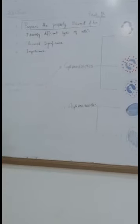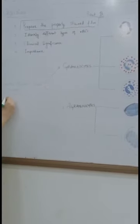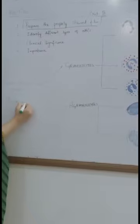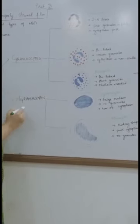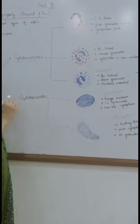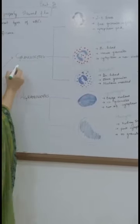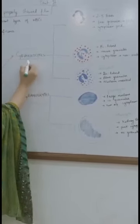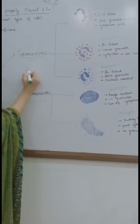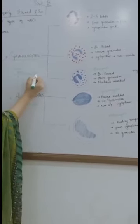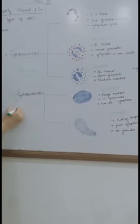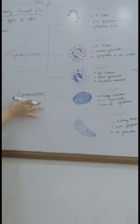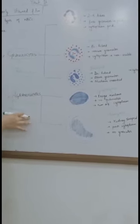White blood cells, WBCs or leukocytes — as you have read in your theory, there are two types of WBCs: granulocytes and agranulocytes. Granulocytes, as the name suggests, have granules in their cytoplasm. Agranulocytes — 'A' means absence — so these cells don't have any granules in their cytoplasm.